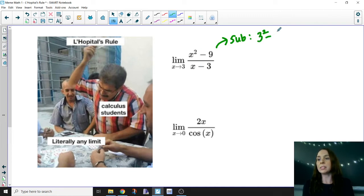I get (3² - 9)/(3 - 3), and that is 0/0, which is one of the many indeterminate forms where you can use L'Hopital's Rule.